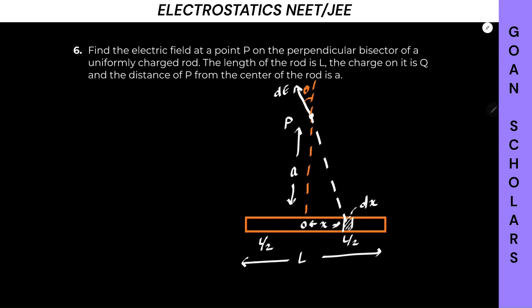So it is all positive charge. A small length element dx, the total rod length is L, and this length element is at a distance x from center O. Point P is the point at which we are finding the electric field, at a distance A from the center. For a uniformly charged rod, what is constant? Linear charge density lambda, which equals Q/L.